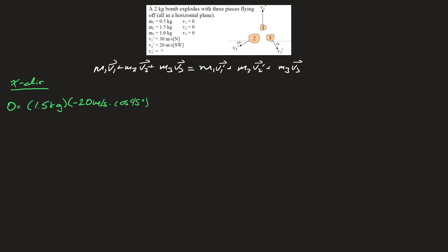And I have to add m3v3 prime. So m3 is 1 kilogram, and v3 prime we don't know. We do know, however, that the x component is simply v3 prime times the cosine of the angle alpha.